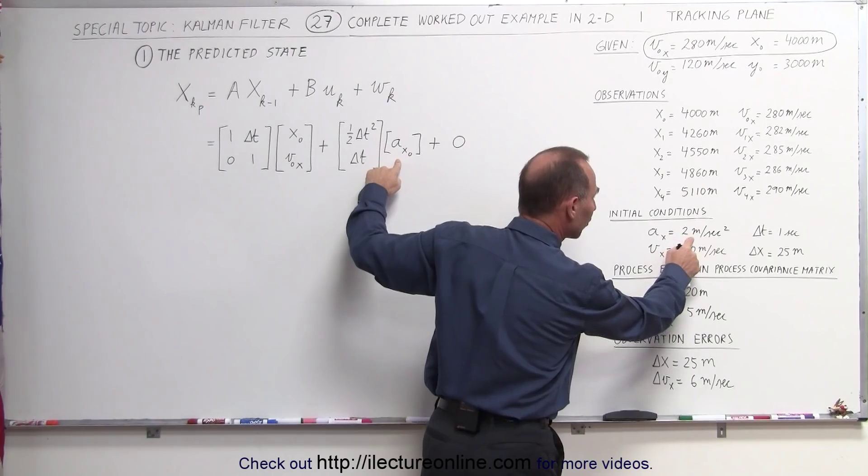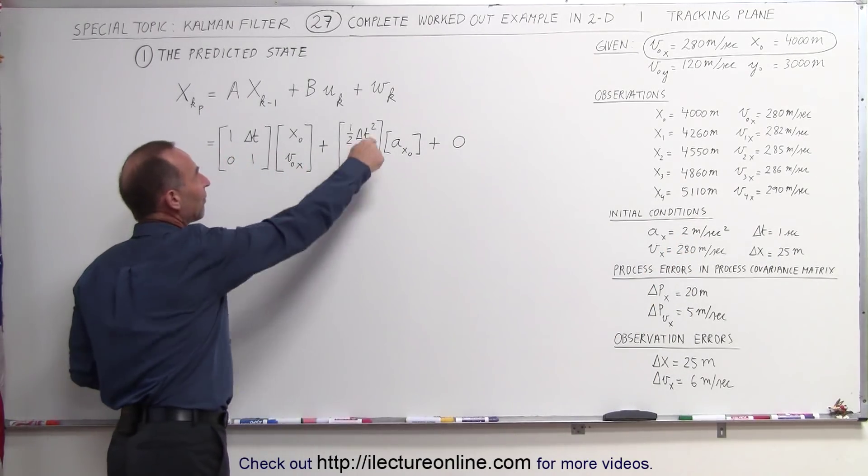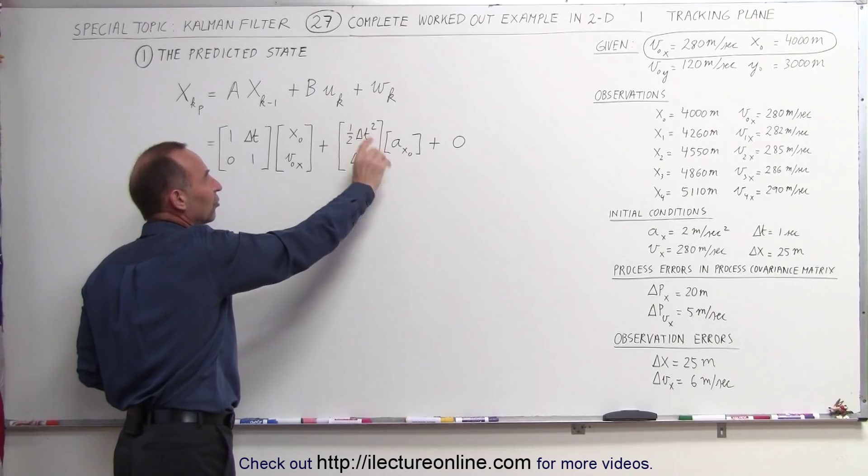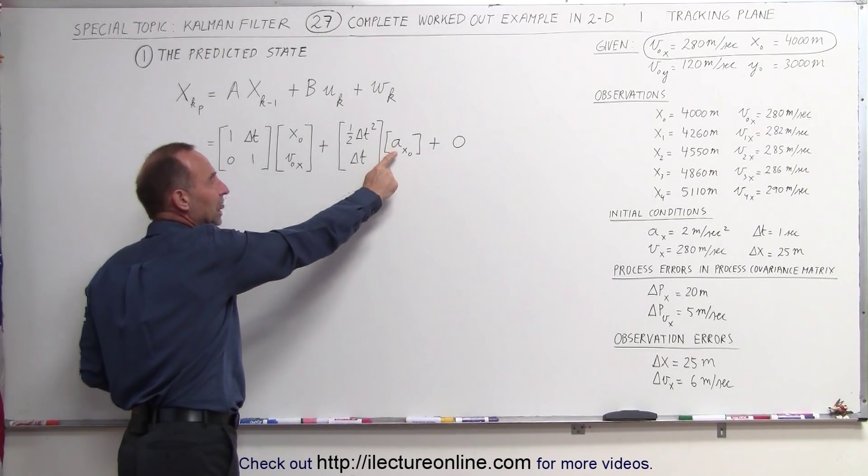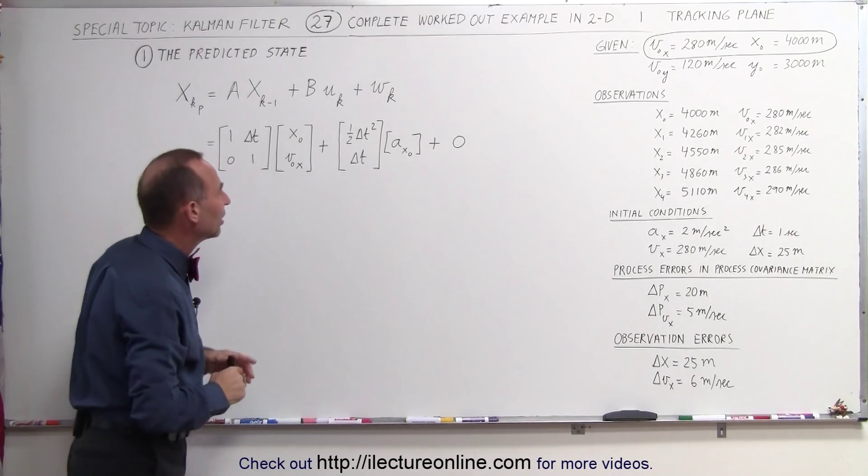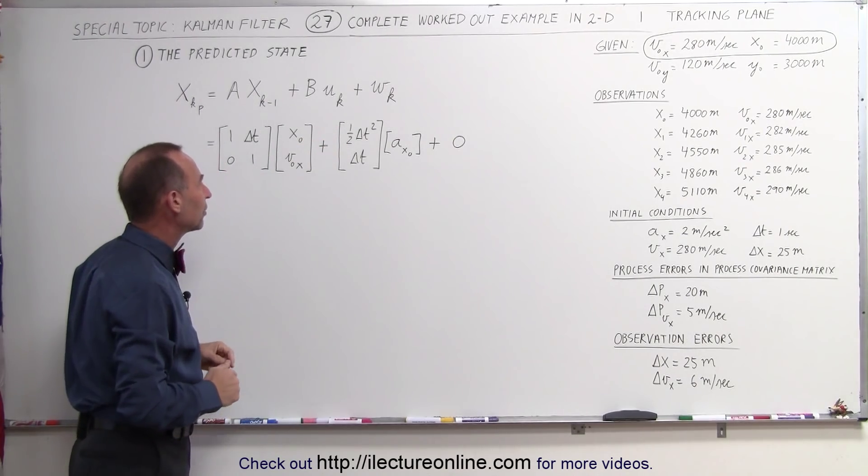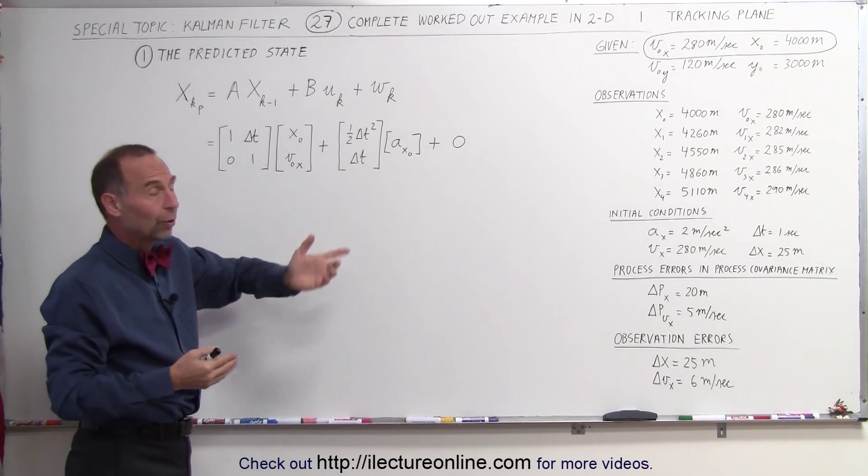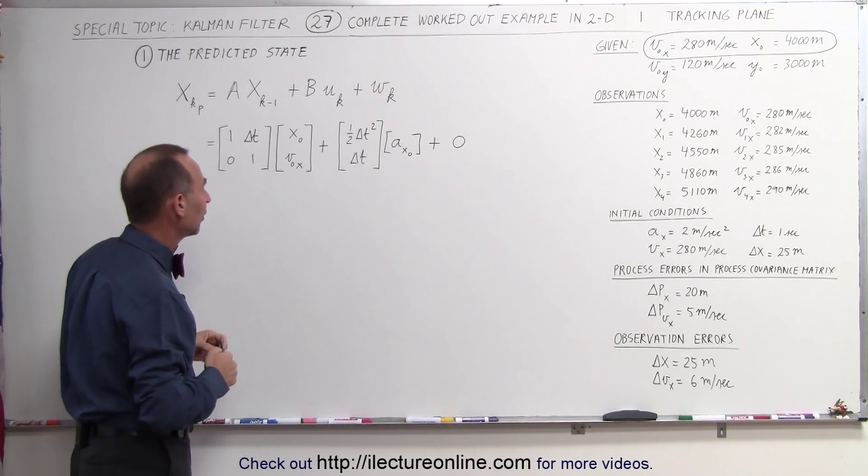And then we have to have a B matrix here which allows us to translate the acceleration into an adjustment to the position and the velocity, and that's done according to the B matrix here. That would be the B matrix for a two-dimensional Kalman filter.